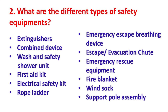What are the different types of safety equipment? These include: Eyewash and Safety Shower Unit, First Aid Kit, Electrical Safety Kit, Rope Ladder, Emergency Escape Breathing Device, Emergency Rescue Equipment, Fire Blanket, and support for Assembly Point.